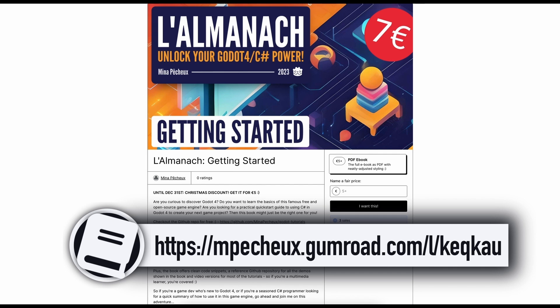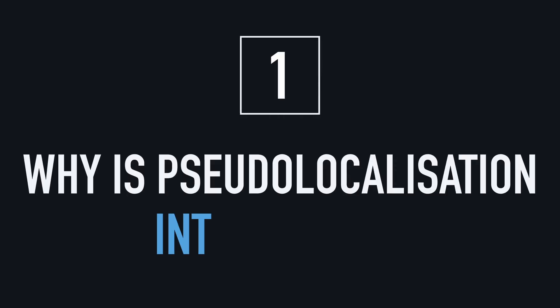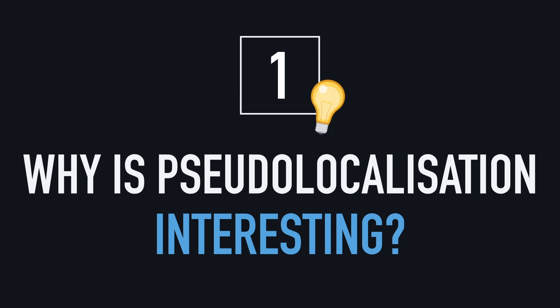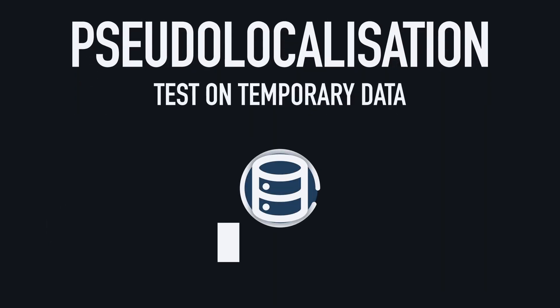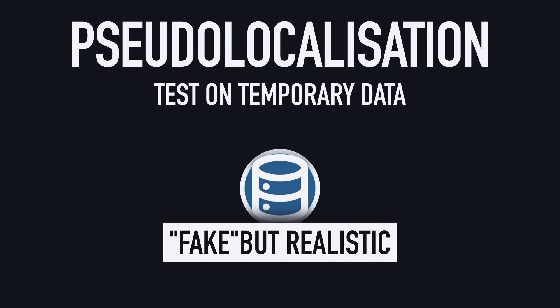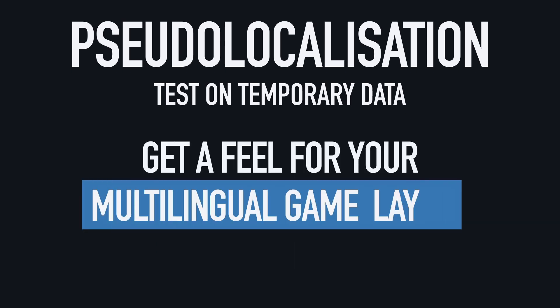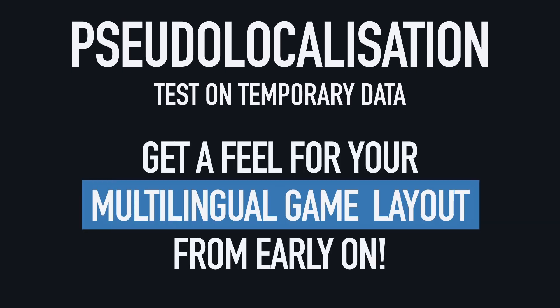And now with all that said, let's dive in and talk about pseudo-localization in Godot 4 and C-sharp. So before diving into Godot's tools for pseudo-localization, let's quickly see why it's interesting at all. In a nutshell, pseudo-localization is about using some temporary data that approximates real multilingual text pretty well, and allows you to get a feel for what your game will look like in various languages early on, even if you haven't actually finished translating everything yet.